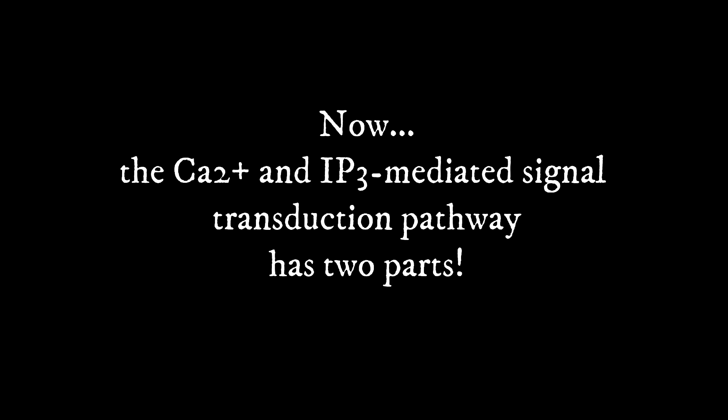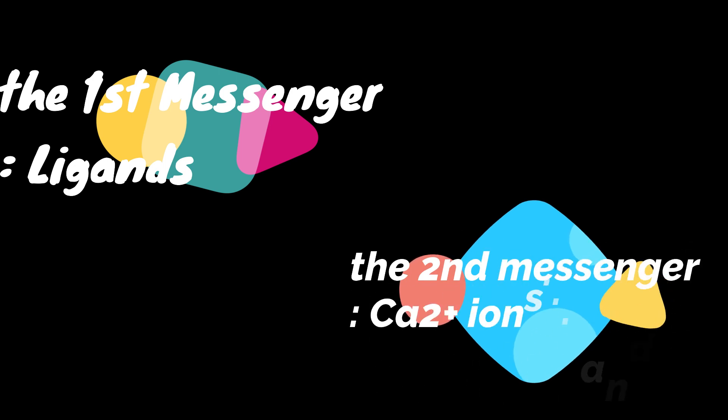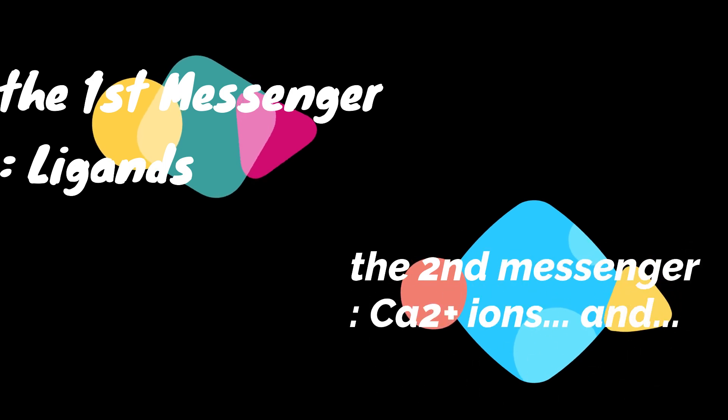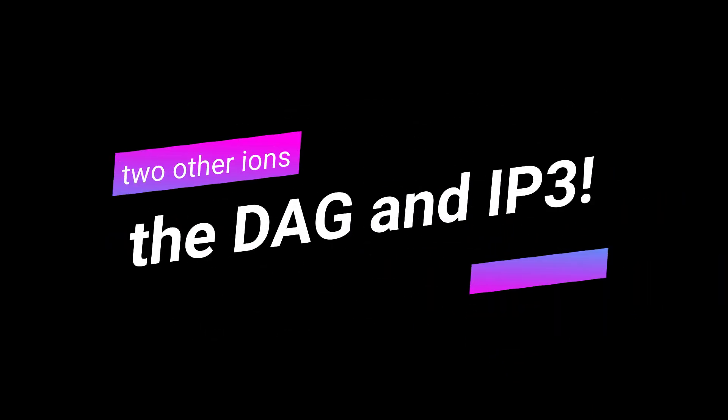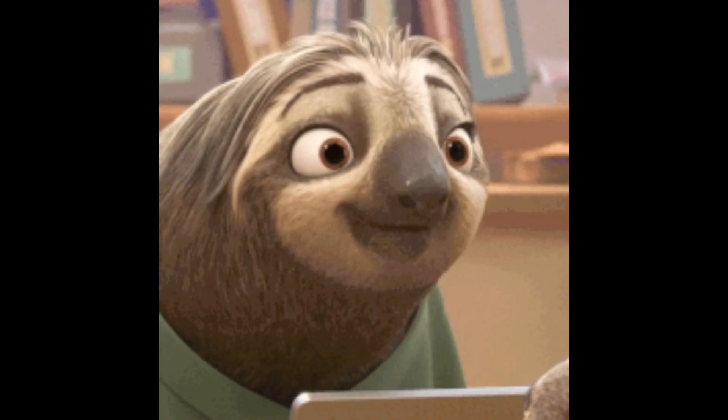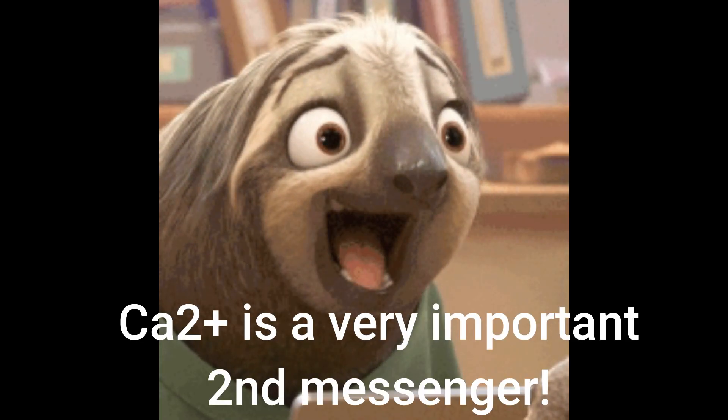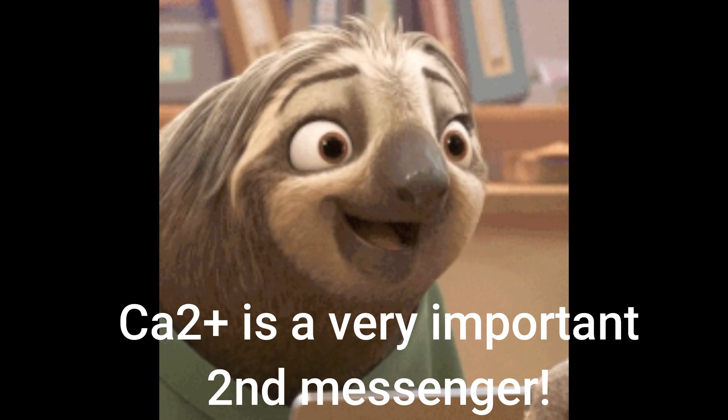The calcium and IP3 mediated cell signal transduction pathway has two parts. The first messenger, that is the extracellular signalling molecules, also known as ligands. And the second messenger, that is the calcium ion and two such other molecules called IP3 and DAG. Calcium is a very important second messenger, keeping in mind all the important things that can happen with its help.